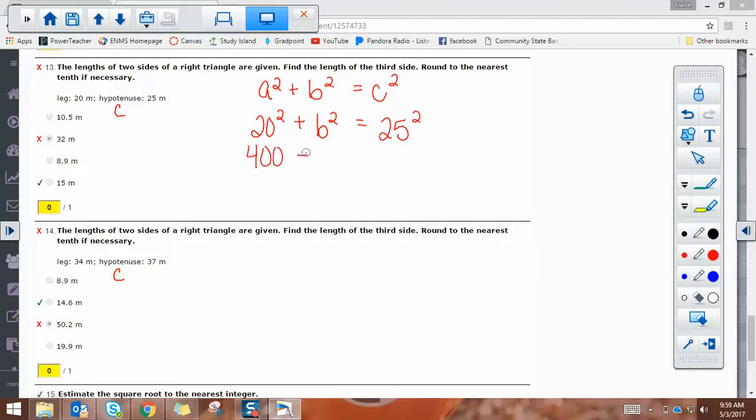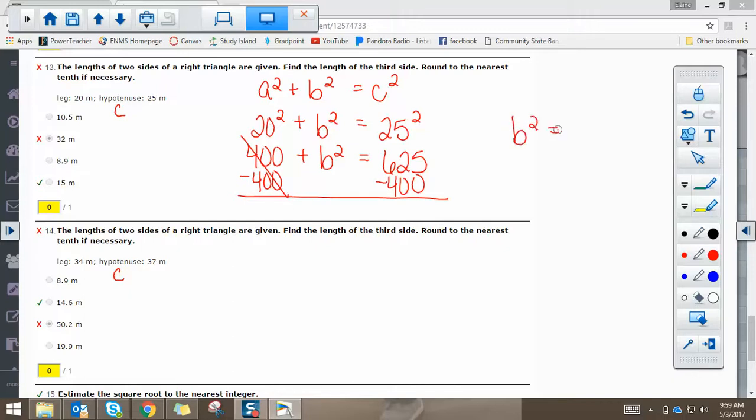20 squared is 400. 25 squared is 625. Now it's an equation. You're just solving for b squared. So we're going to subtract 400. That's going to give me b squared equals 225. But I have to find b. I'm not trying to find b squared. I'm trying to find b. So I have to square root both sides because square rooting something that's squared, they cancel each other out. So the square root of 225 is 15, so that's how we get 15 meters.